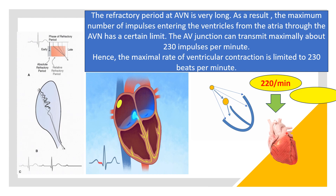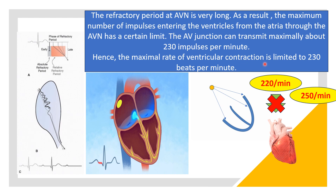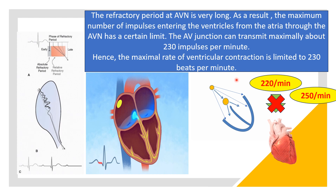Whatever the atrial rate — 200, 300, or 350 beats per minute — the AV node will not transmit all those impulses to the ventricle. Maximally up to 213 impulses per minute can be transmitted through the AV node. The maximal rate of ventricular contraction is thus limited to around 230 beats per minute. This is especially beneficial in atrial fibrillation when the atrial rate is very high, as it prevents all atrial impulses from reaching the ventricle and also helps prevent ventricular fibrillation.